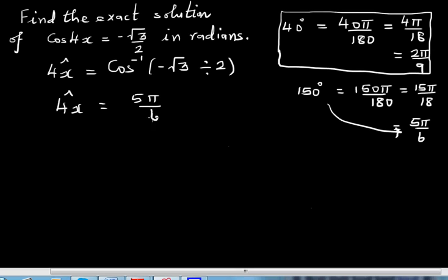Now divide both sides by 4. So x, one of the solutions, is 5 pi over 24. This is the exact solution in radians.